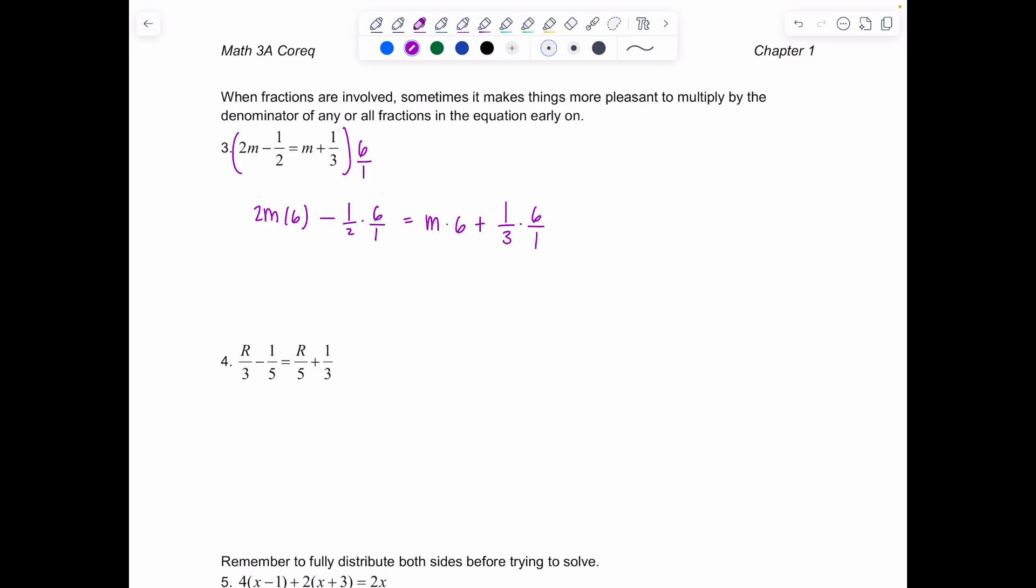And for a hot second it looks worse. It does. But then we're going to clean up. You're going to be so happy right here. Watch. So this is going to give us 12m minus 3 equals 6m. This cancels right? Plus 2.